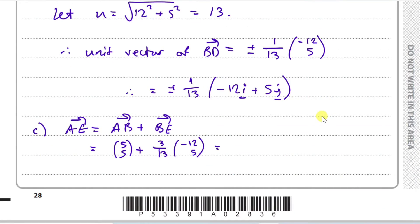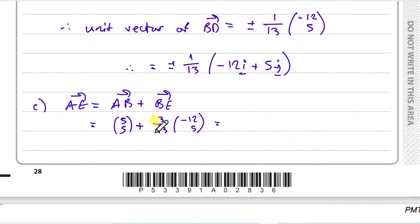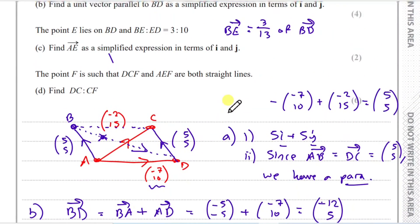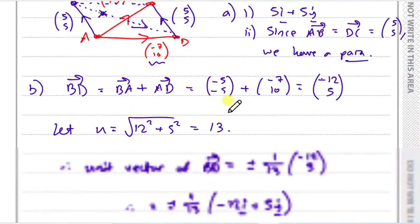And now we just solve this one. So adding it all up, for the first one, it'll be 5 plus 3 thirteenths of minus 12. So I'm going to do like a massive one. This will give us 29 over 13th for the bottom vector. And that should give us 80 over 13. And that's it. This is your actual final answer. In terms of i and j.